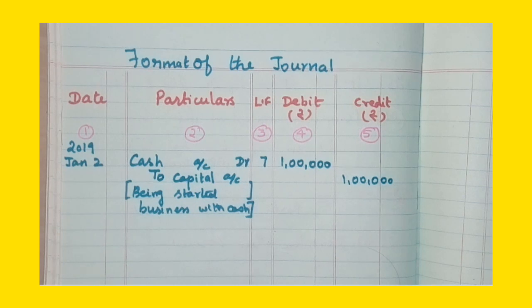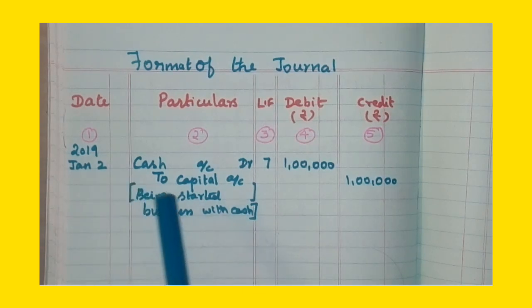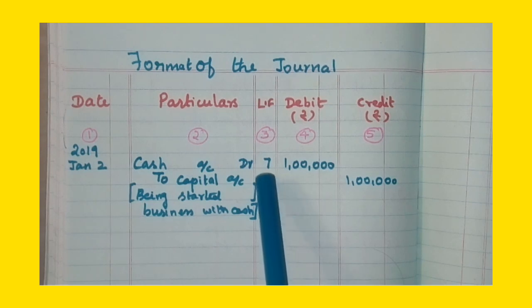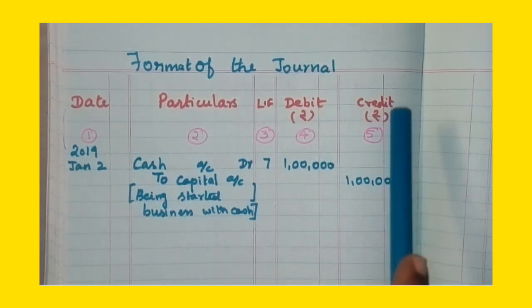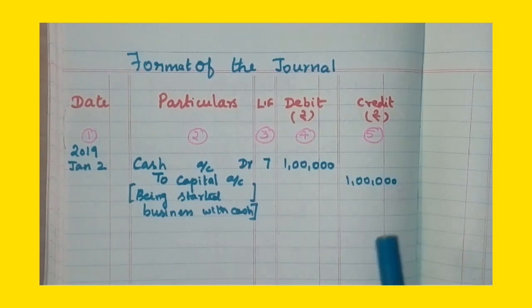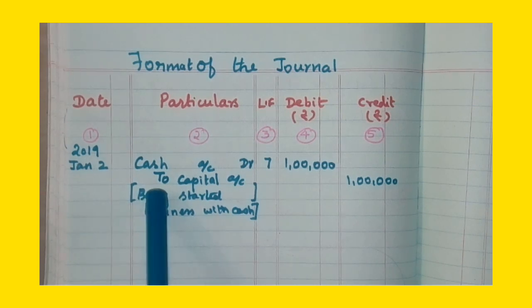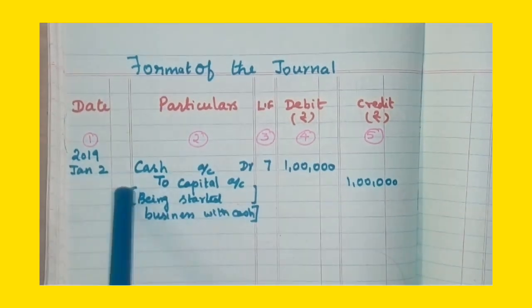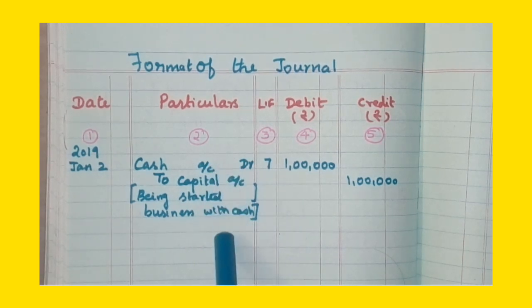So this is how we pass journal entries. This is the format: date, particulars, LF, debit, and credit. We must record according to this format. The LF page number must still be written. Narration is a must — it gives you the idea about the transaction. You have to write it at the end of every journal entry. In the next module, we will see the steps in journalizing the transactions. Thank you.